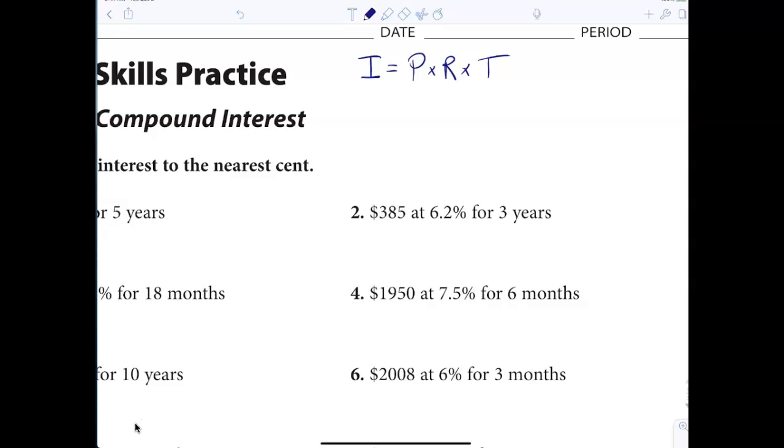P stands for principle. R is the rate. Yes, the interest rate. R is the interest rate. And T stands for time. T stands for time. All right. Now the only thing I want you to put down for time is time must be measured in years. Time is measured in years. So I is for interest, P is for principle, R is for rate, and T is for time. Again, it's a very simple formula. Very simple.